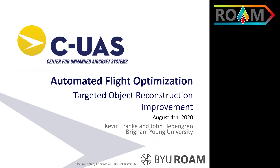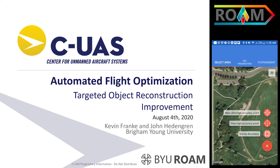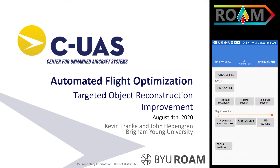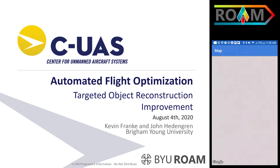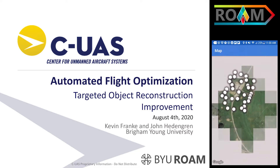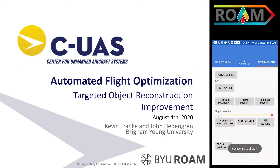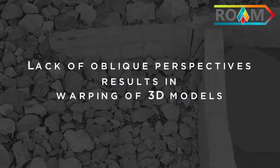Hello, my name is John Hedengren and with my collaborator Kevin Franke, we're proposing a new three-year project on automated flight optimization using targeted object reconstruction improvement. One of the things that we're doing is taking our existing algorithms, which are inherently two-dimensional in terms of targeting the area we'd like to select, and then building a three-dimensional targeted view planning to be able to capture the best model.